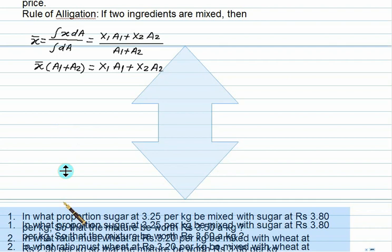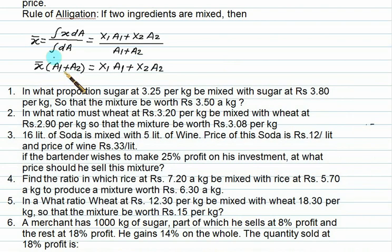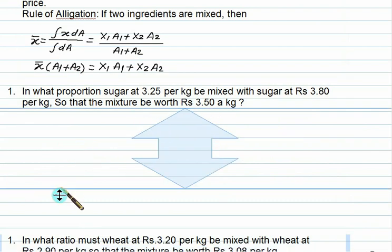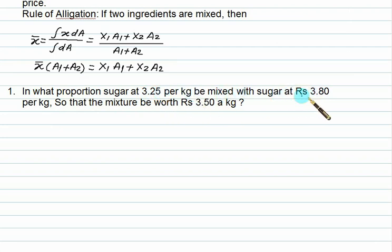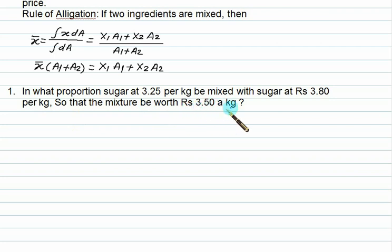Mean value theorem — we don't need to know what is cheap or anything else. We just have to find out the mean values. In what proportion should sugar at 3.25 rupees per kg be mixed with sugar at 3.80 rupees per kg so that the mixture will be worth 3.50 rupees per kg?